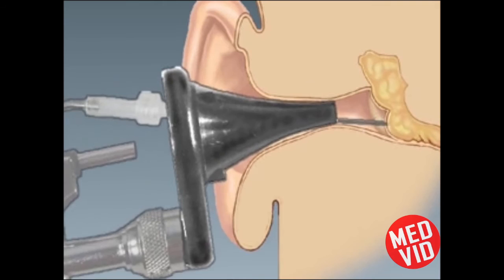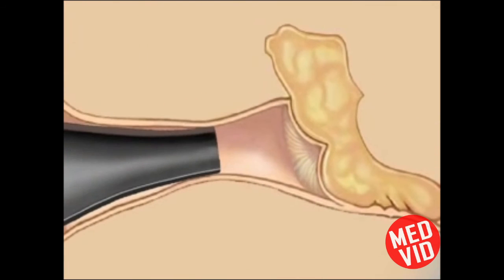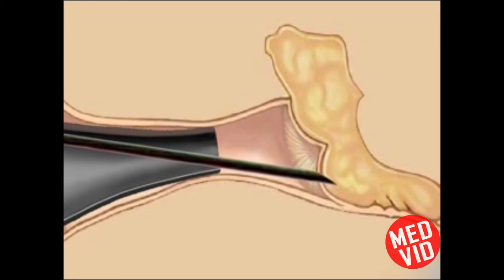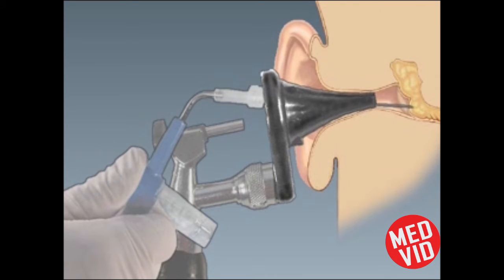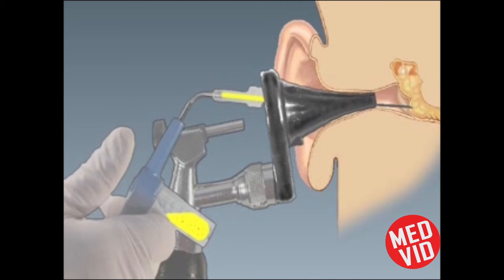Insert the needle tip through the inferior portion of the tympanic membrane 2 to 3 mm above its inferior rim. Immediately after penetrating the tympanic membrane, place your thumb on the orifice of the tympanocentesis aspirator and start suctioning the middle ear fluid. Once pus is visualized in the aspirator, promptly remove your thumb from the aspirator to avoid losing the specimen into the suction tubing.